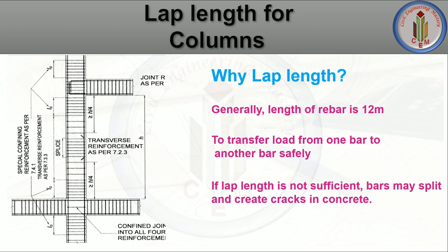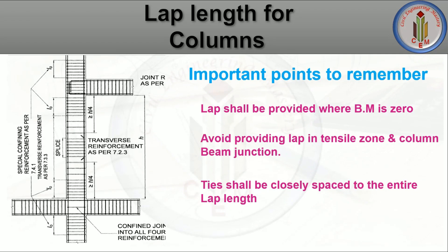Next, why do we need to provide lap length? Generally, the length of rebar produced by the manufacturer is 12 meters. We cannot get rebar longer than 12 meters from the manufacturer. So if we want to construct a five-story, six-story, or high-rise building, we need to overlap the 12-meter bars up to the required height — that is why we need to provide lap length. It also helps to transfer load safely. If lap length is not sufficient, bars may split and cracks develop in the concrete, leading to collapse of the entire structure.